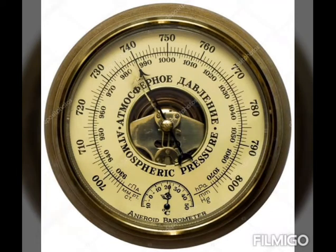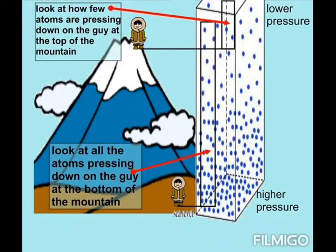Air usually moves from an area of high pressure, or anticyclone, to an area of low pressure, or depression. Depressions are usually associated with bad weather conditions and rain. A barometer is a device to measure the changes in air pressure, and it also helps to forecast weather because change in air pressure is linked to weather conditions.